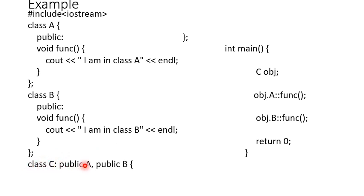Class C publicly inherits A and B. In main method, C is the derived class and obj is the object of class C. To call both methods, use object name obj dot class name A scope resolution operator and function name.